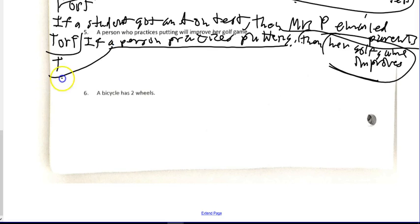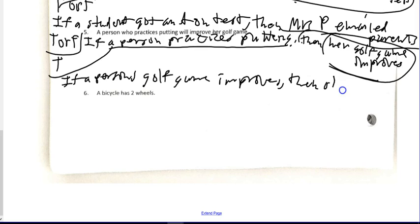Now, the converse. If a person's golf game improves, then she practiced. Again, I would take T or F. It is very likely that they got better before practicing. But, if you want to say false, it just happened by random luck, or they made a wish with a genie, or they're Harry Potter, and they cast a magic spell, whatever. But, if you can go true, make your life easy.